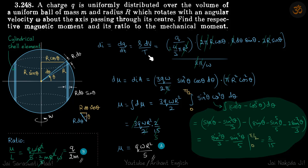So rho dv by t, so rho is q by 4 by 3 pi r cube. And dv is the perimeter 2 pi into r cos theta into thickness r d theta sin theta times height 2r sin theta.